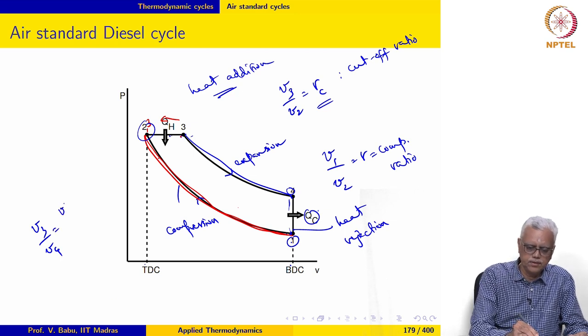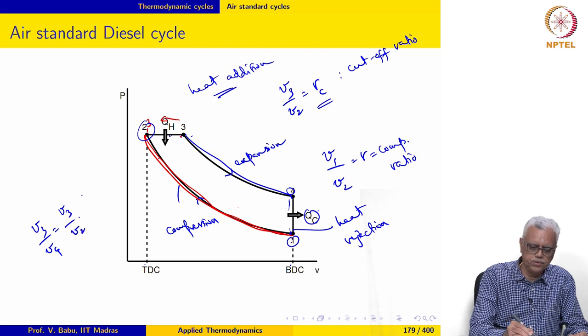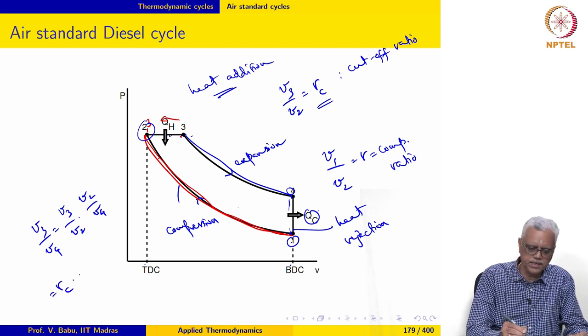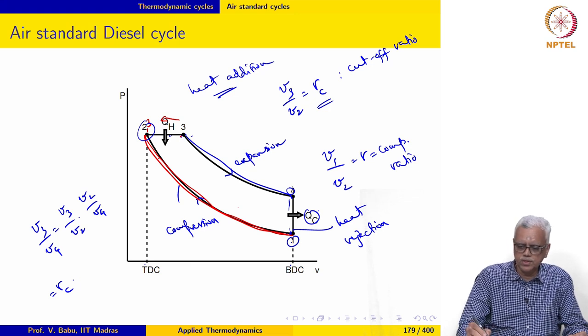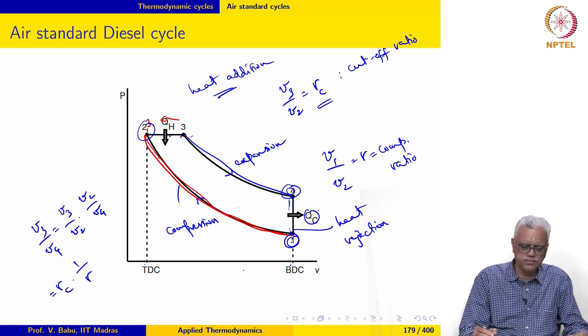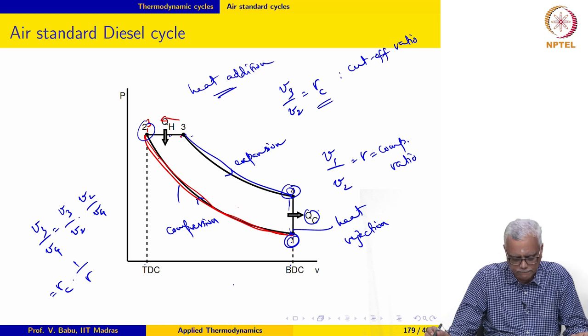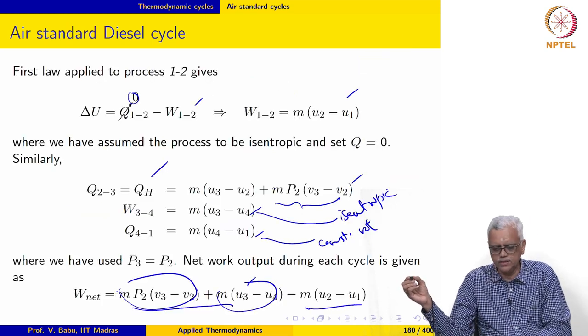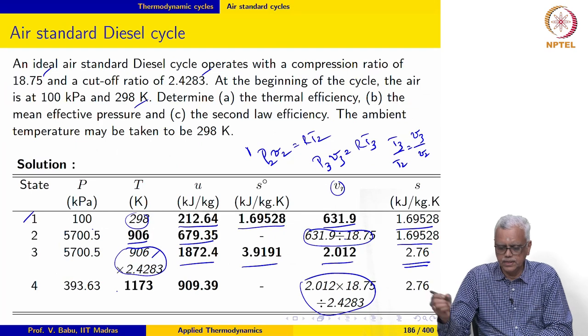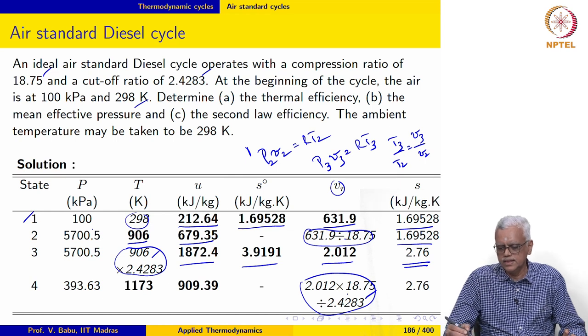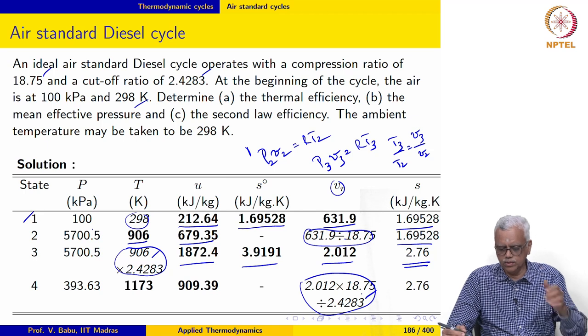We may write this as V3 over V2 times V2 over V4. V3 over V2 is nothing but Rc and, notice that V4 equals V1, so V2 over V4 may be written as 1 over R. Therefore, V4 over V3 equals R over Rc. The effective expansion ratio is nothing but R over Rc and that is what we have done here.